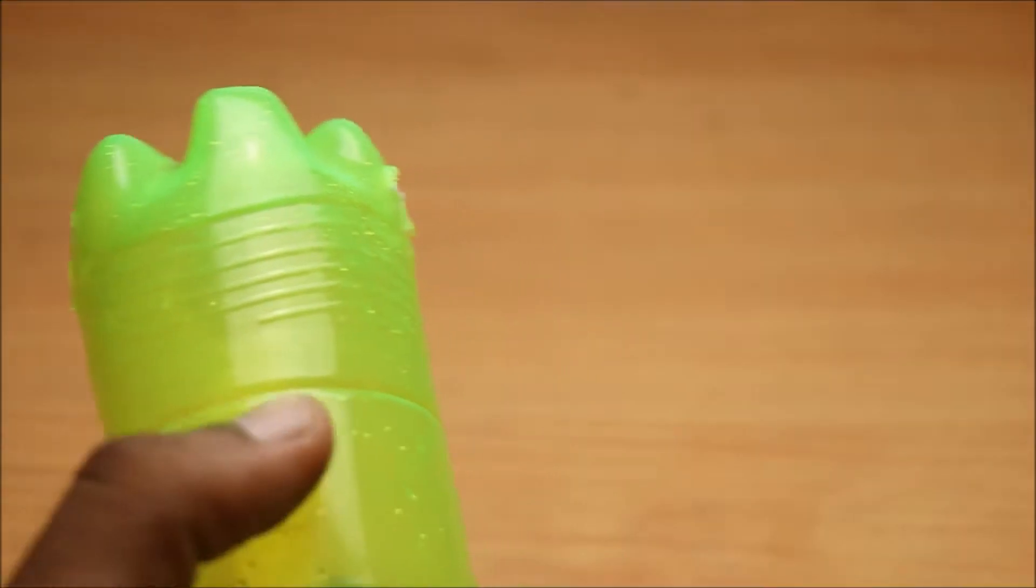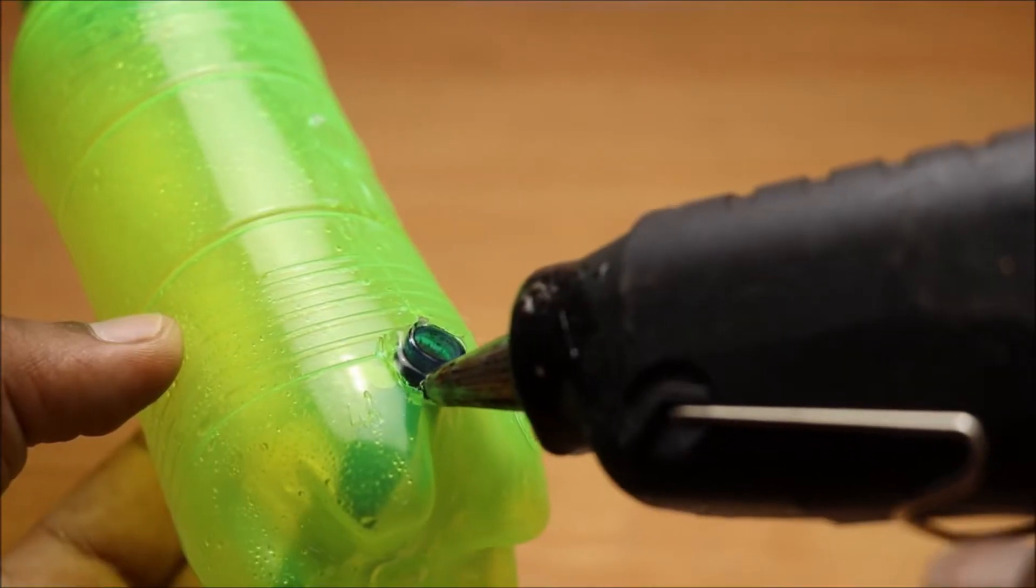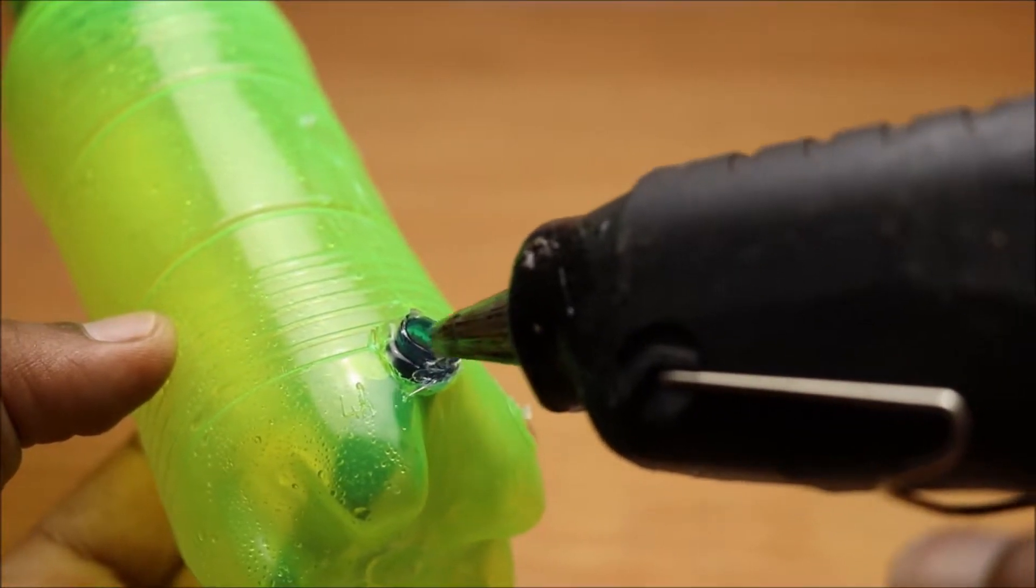Make a hole in the water bottle using scissors. Insert a tube inside the hole. It can support the shaft. Fix it using a hot glue gun.